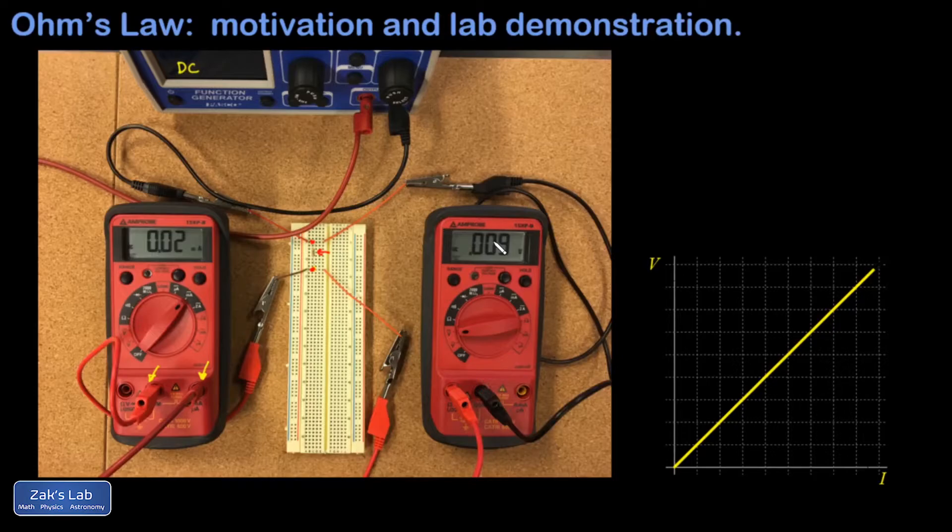The leads of that second multimeter are connected right here to the high side of the resistor and right here to the low side of the resistor, so that's going to be reading voltage for us.